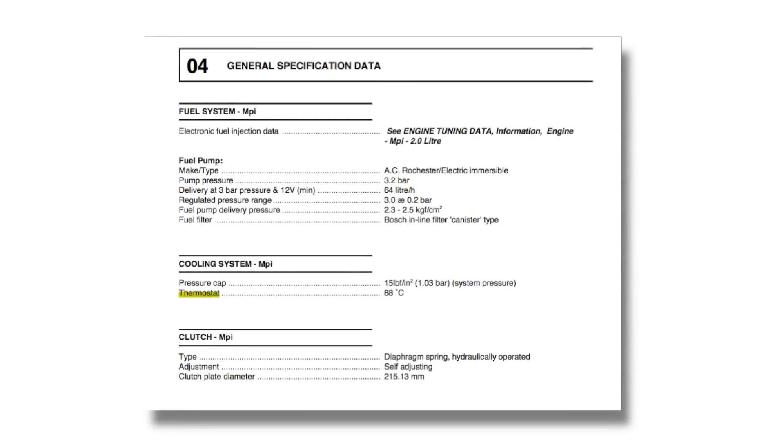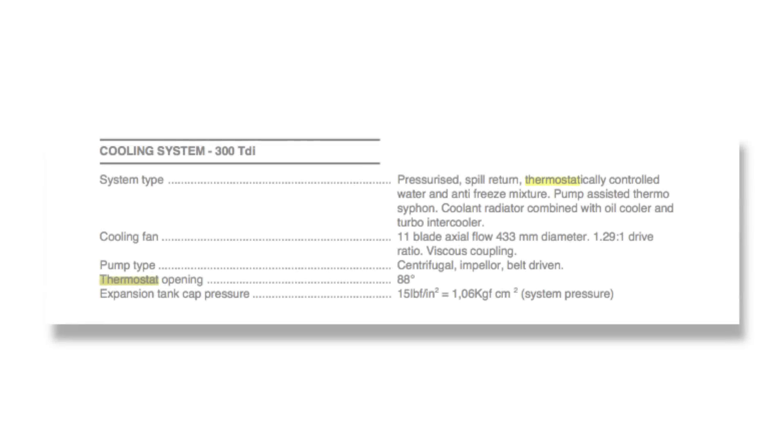But generally you're going to be looking under general specification data. In this case is the MPI. Cooling system MPI down there, thermostat 88 degrees which is the rating for that engine. The 300 TDI here is also 88 degrees. That's written as thermostat opening.